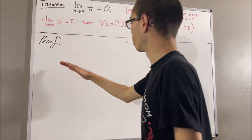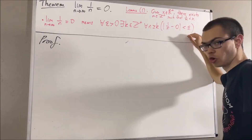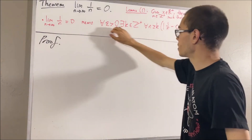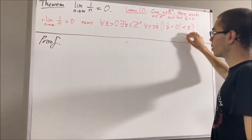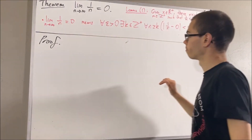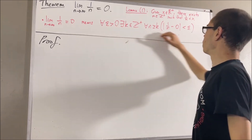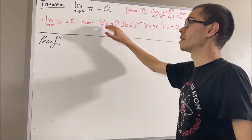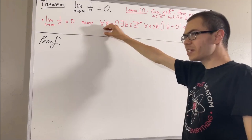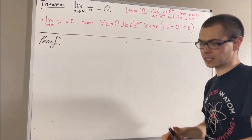Now, the whole goal in the proof is to show that this statement is true. That's all we need to do, because if we can show that this statement is true, well, that's precisely what it means for this to be true. Now, in proving this, we're trying to prove a statement about every positive real number. So give me an arbitrary positive real number — I'll call it epsilon.